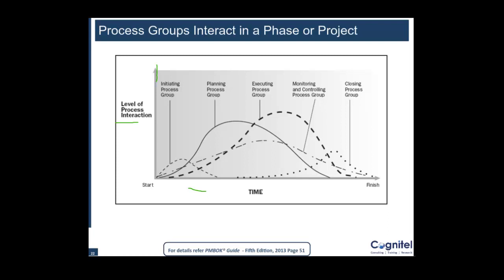At the start of the project, the most interactive process group is Initiation, because that's the process group you take up when the project starts. Of course, some planning also starts, and some monitoring and controlling also starts at the same time. Once the project moves on and you've done some planning, you might start some execution like hiring certain people or bringing people onto the team. Those kinds of execution work can start early, but the highest level of interaction still remains with Initiation.